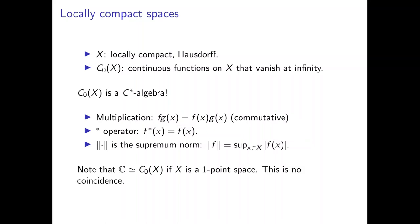Notably, the complex plane from the previous example is isomorphic to C₀(X) when X is a one-point space, since any function on a single point is uniquely identified by the complex value it takes there. More generally, it is no coincidence that every commutative C-star algebra is isomorphic to C₀(X) for some locally compact Hausdorff space X — this will be a key theorem later.